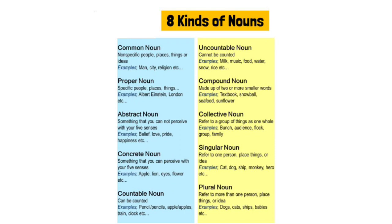Now we have uncountable noun. Uncountable nouns cannot be counted in numbers. For example: milk, music. Now we have compound noun — compound nouns are those nouns that are made up of two or more words.